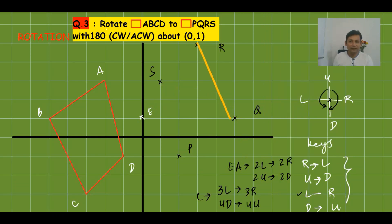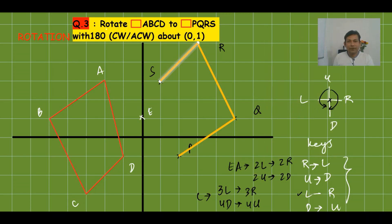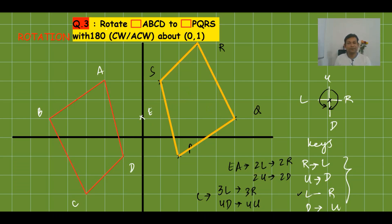For D: 1 left and 2 down, giving 1 right and 2 up from center to get point S. Joining P, Q, R, S gives the image shape. Shape ABCD has been mapped onto shape PQRS by 180° clockwise or anticlockwise rotation about (0, 1). This completes Case 1 of rotation: forming an image from a given object using center, angle, and direction of rotation.